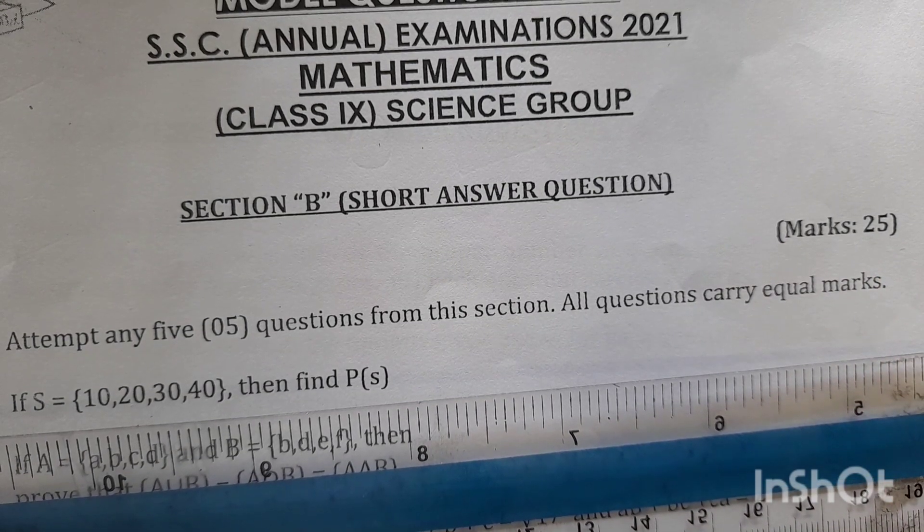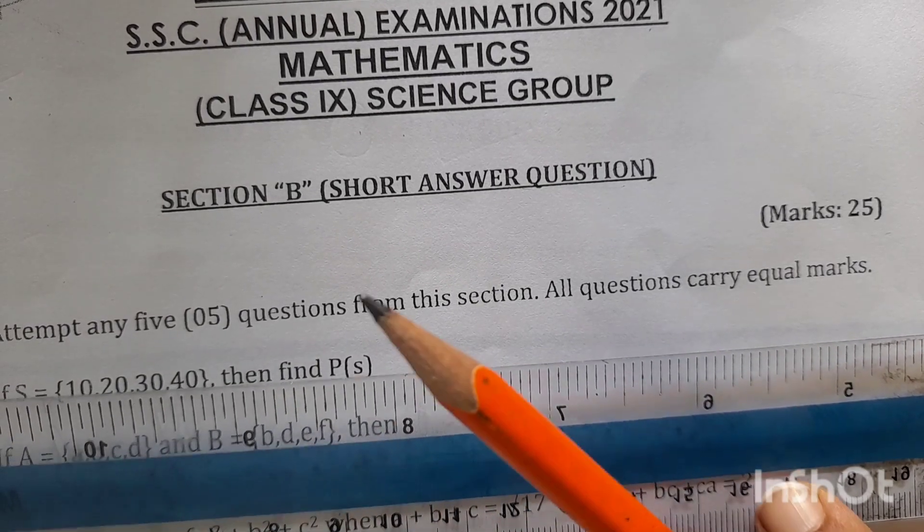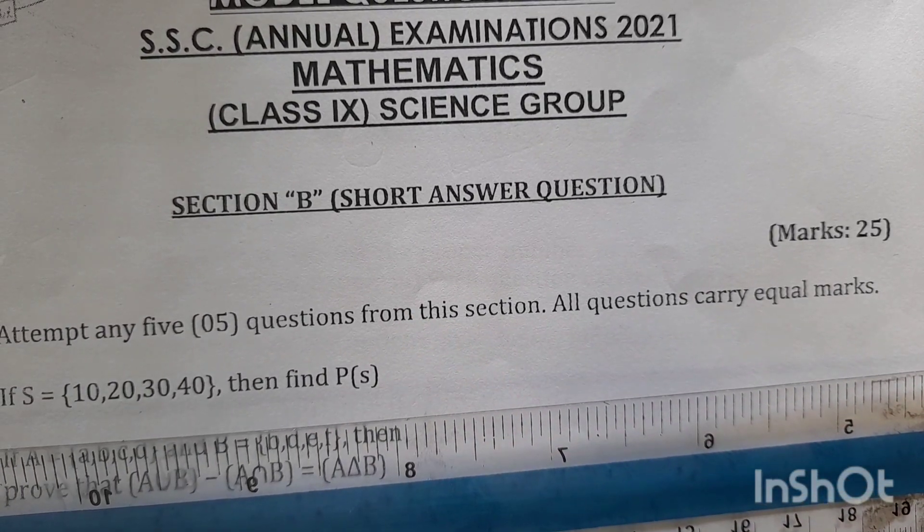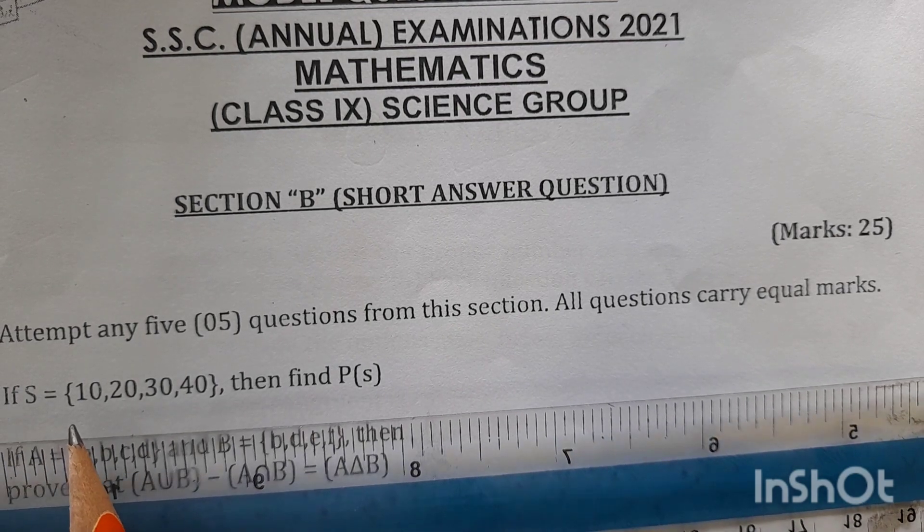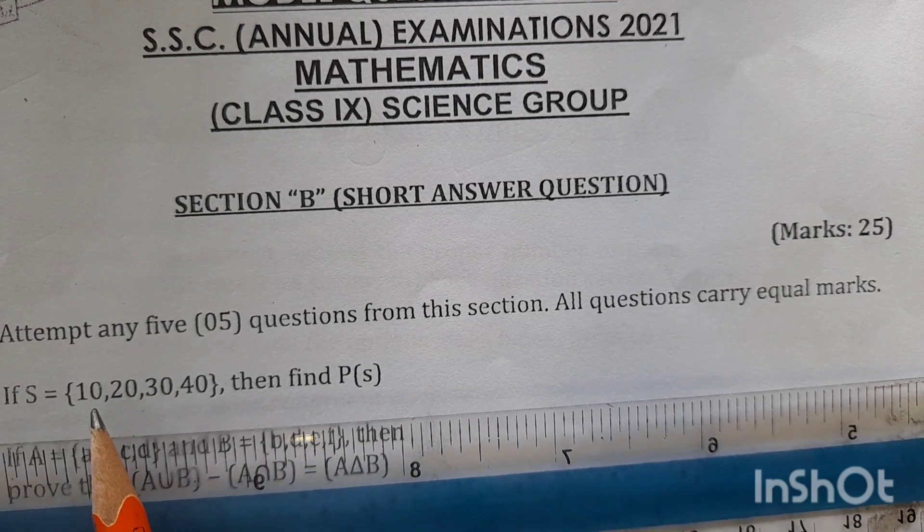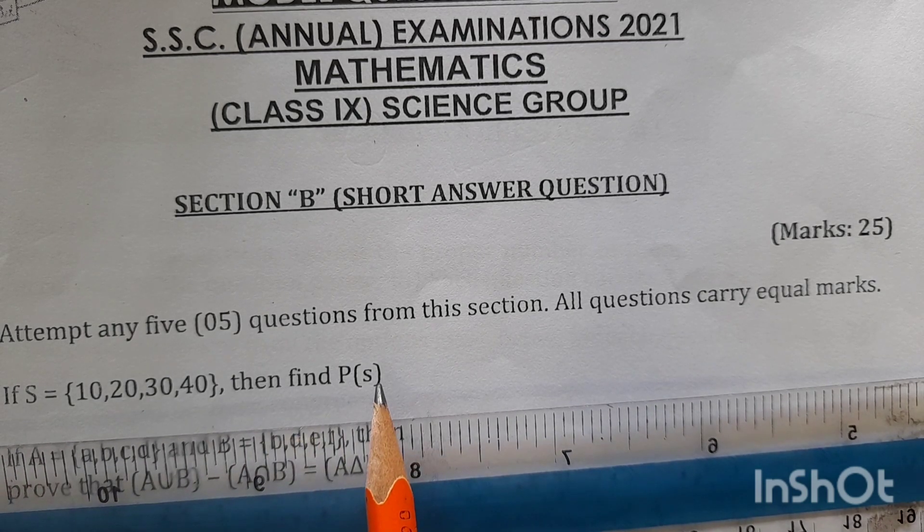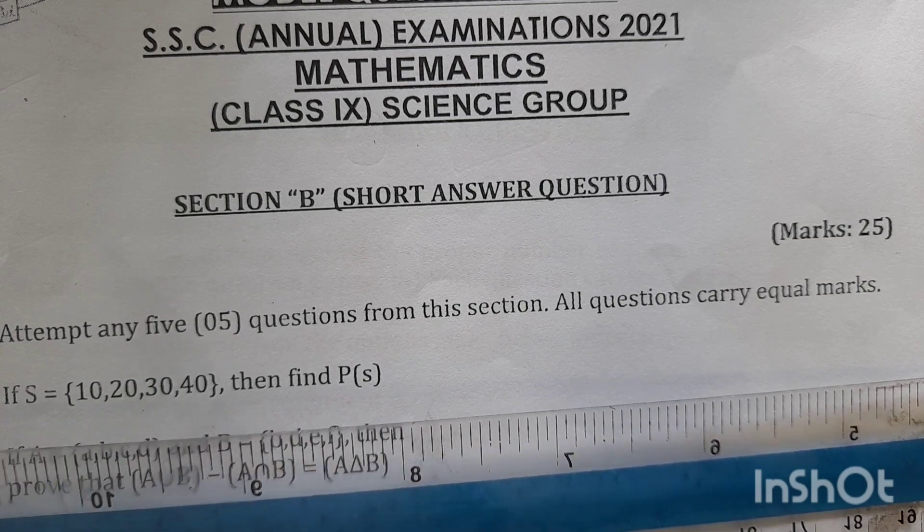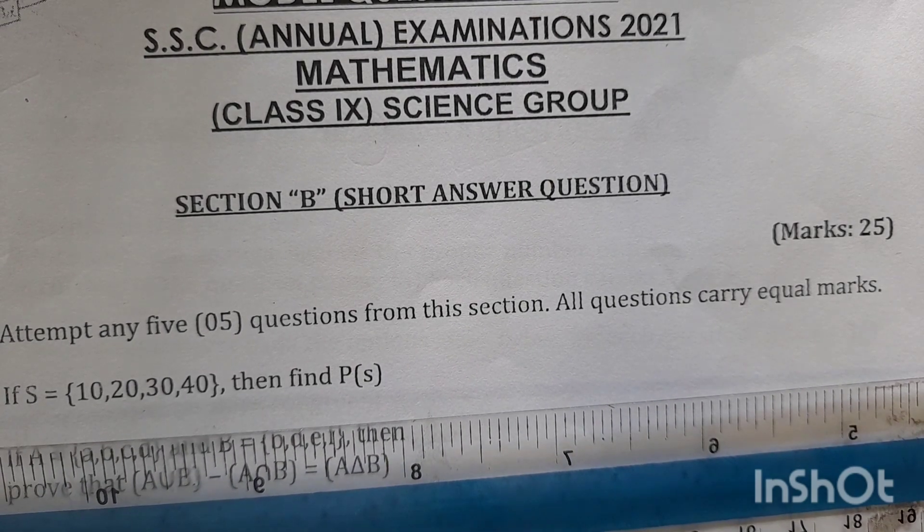So as you have solved section A, now we will solve section B. Question number 2 is if S is equal to a set of 10, 20, 30, 40. Four members are there and we have to find out the power set of this set. Okay, let's see. Let's revise this question, how to solve this set.